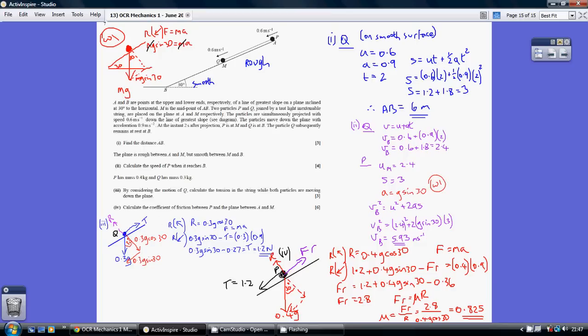There's friction going on because we're on a rough surface. We've got a weight of 0.4g because we're told that the mass of p is 0.4. So these are our forces. We're just going to repeat what we've just done. Resolving perpendicular to the plane, we've got r equals 0.4g cos 30. This one here.